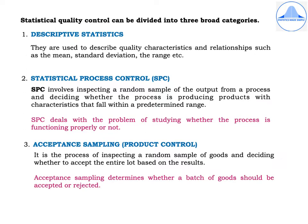The second is statistical process control, or SPC. SPC involves inspecting a random sample of goods from a process and deciding whether the process is producing products with characteristics that fall within a predetermined range. SPC deals with whether the process is functioning properly or not. The third is acceptance sampling, also called product control, which is the process of inspecting a random sample of goods and deciding whether to accept the entire lot based on the results — determining whether a batch of goods should be accepted or rejected.